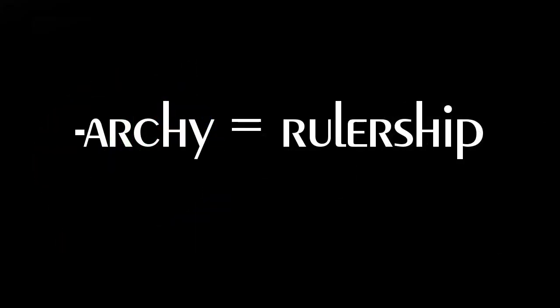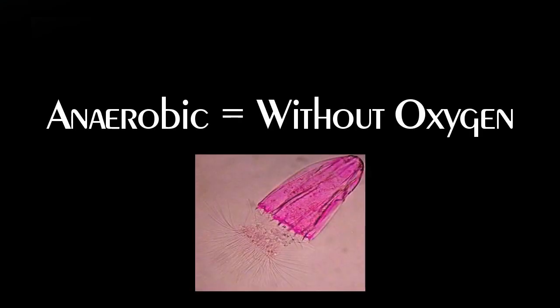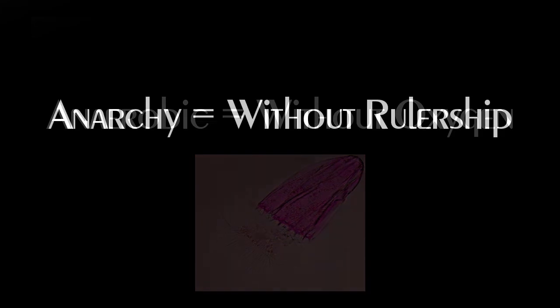One reason is semantic. The root archy means rulership. The prefix an means lacking or without. By common usage, an implies something that's unusual or abnormal in its absence. Anaerobic organisms exist without oxygen, which is weird. So anarchy is literally without rulership. But it implies that's an unnatural condition.